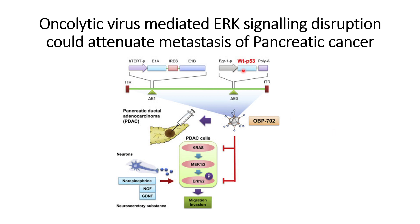If the damage is beyond repair, p53 will trigger apoptosis of the cells. In this oncolytic virus, they will also transduce wild-type p53 so that whenever it is translated within the tumor cells, it can perform its regular functions — triggering apoptosis when damages are beyond repair. However, this is a secondary function of the oncolytic virus-mediated approach.